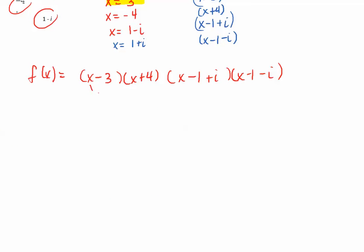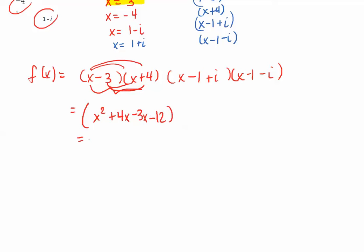Take your two real factors and FOIL that out using double distribution. x times x is x squared, x times 4 is positive 4x, then negative 3x, and negative 3 times 4 is negative 12. So this simplifies to x squared plus x minus 12.